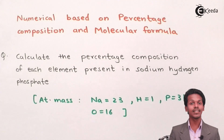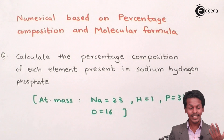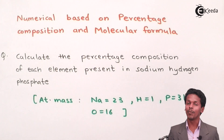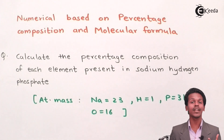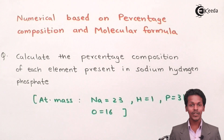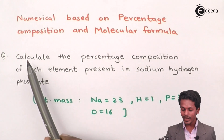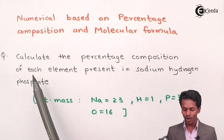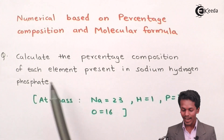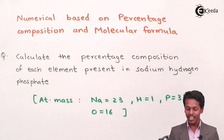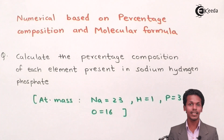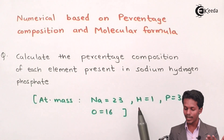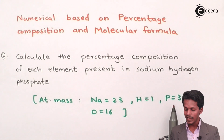This numerical on your screen is based on percentage composition and molecular formula. The question asks us to calculate the percentage composition of each element present in sodium hydrogen phosphate. The atomic masses given are: sodium = 23, hydrogen = 1, and phosphorus = 31.